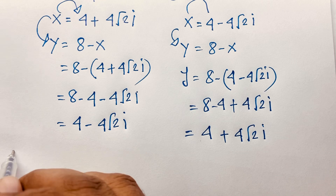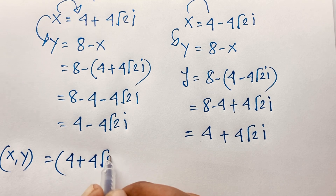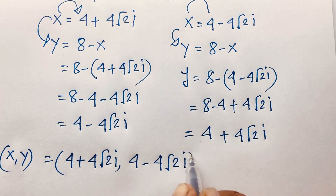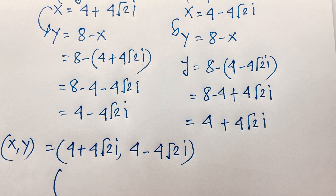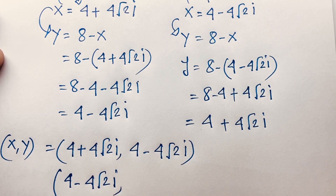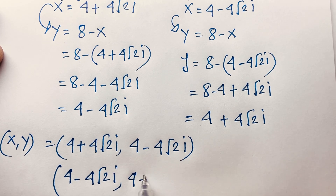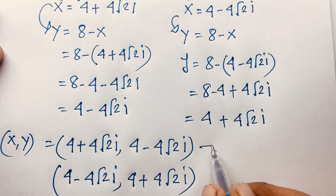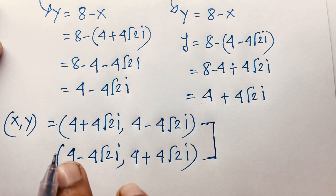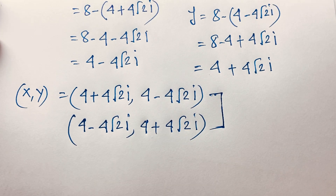So when X is equal to 4 plus 4 square root 2 times i, then Y is equal to 4 minus 4 square root 2 times i. And when X is equal to 4 minus 4 square root 2 times i, then Y is equal to 4 plus 4 square root 2 times i. We will find out a nice answer, but here is no real solution — here is a complex solution — and both are the final answer.